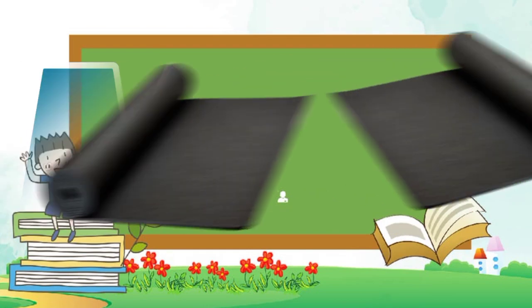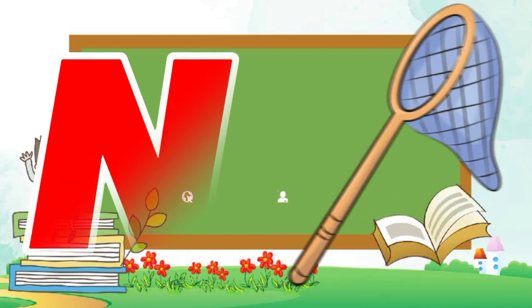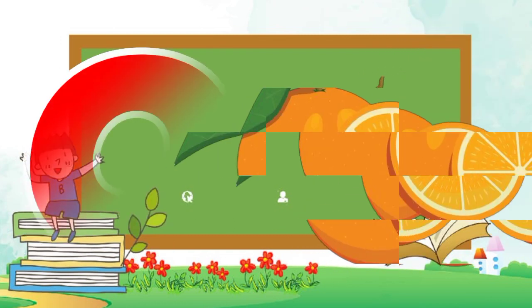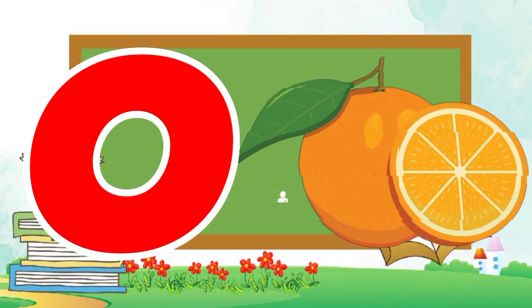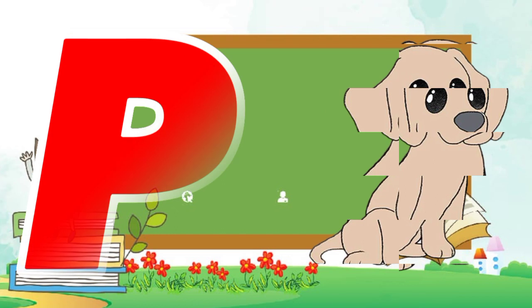M is for mat, m-m-mat. N is for net, n-n-net. O is for orange, o-o-orange. P is for pet, p-p-pet.